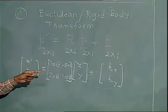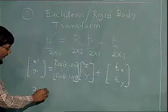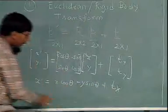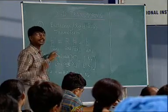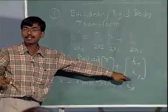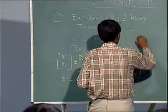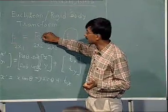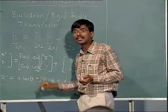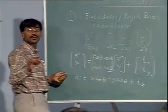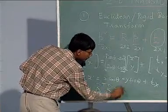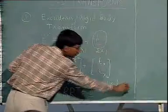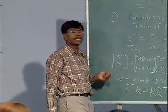How many parameters are there in this transform? Theta, T_x, T_y — three parameters. This is any general 2x1 translation vector, and the rotation matrix R has the property that R transpose R equals R R transpose equals the identity matrix. The determinant of R is always 1 — like sine squared theta plus cosine squared theta always equals 1. This is a Euclidean transform.